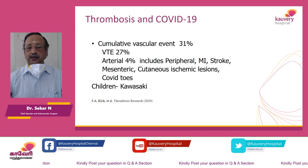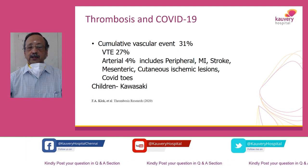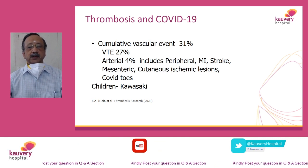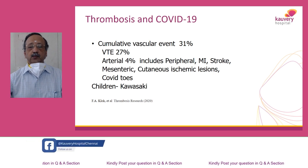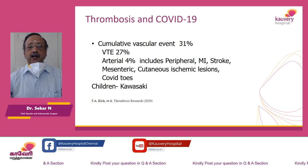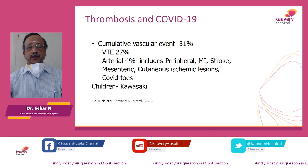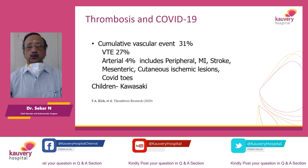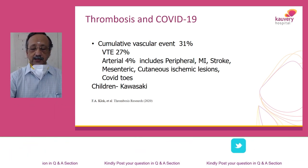In the arteries, we have seen peripheral arteries, myocardial infarction, stroke, mesenteric involvement, cutaneous ischemic lesions developing due to the involvement of small blood vessels in the skin, digital ischemia — patients presenting with digital ischemia alone. And in children, it has been shown to produce something like a Kawasaki syndrome.